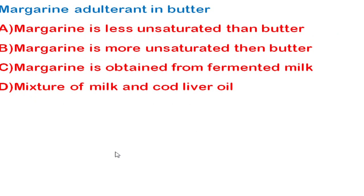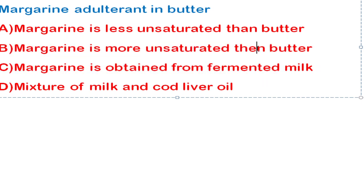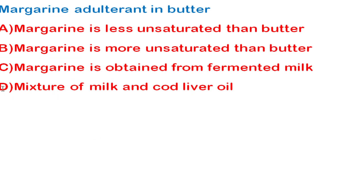The next question: margarine is the adulterating agent for butter — find the correct statement. The correct statement is that margarine is more unsaturated than butter. Butter is a saturated fat, whereas margarine is an unsaturated fat. Other statements are incorrect: margarine is not obtained from fermented milk, nor is it a mixture of milk and corn liver oil. Margarine is made from vegetable oil, generally extracted from corn kernel or soybean oil, while butter is made from milk and cream.